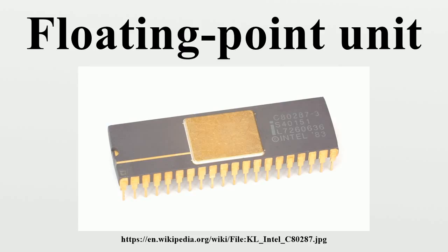Coprocessors were available for the Motorola 68000 family — the 68881 and 68882. These were common in Motorola's 68000-based workstations like the Sun 3 series. They were also commonly added to higher-end models of the Apple Macintosh and Commodore Amiga series, but unlike IBM PC-compatible systems, sockets for adding the coprocessor were not as common in lower-end systems.